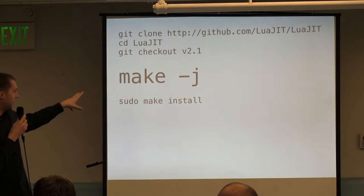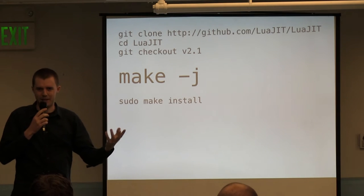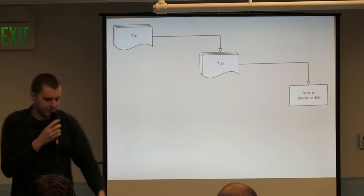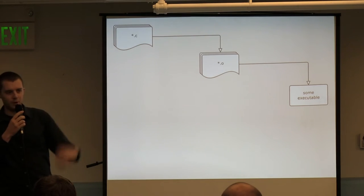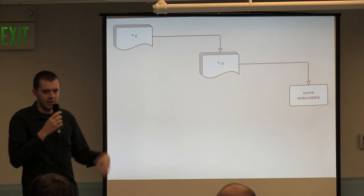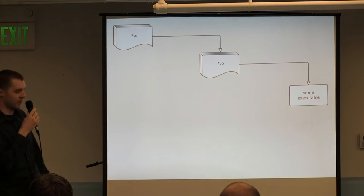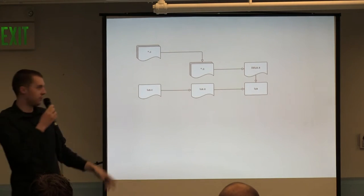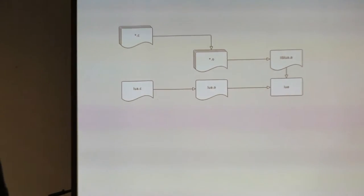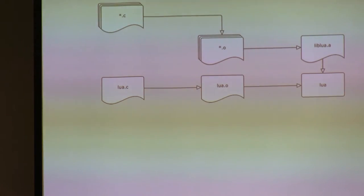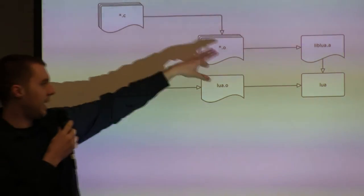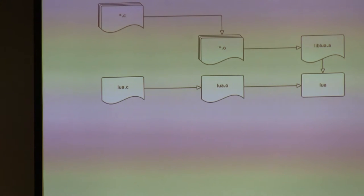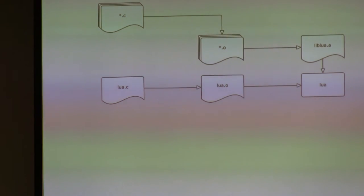I'd like to focus on what happens when you type MAKE. You've got some C files, you compile them, you get a program out — that's not that boring. But LuaJIT is a little bit more complicated than that. You start with portable C code, you compile it, you get LuaJIT. Because LuaJIT is a library, and at the bottom you've got the read-evaluate-print loop — a small program that plugs into the library.